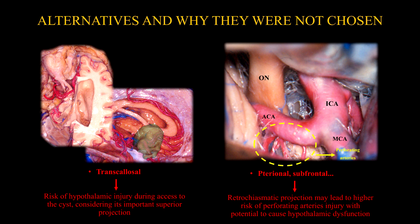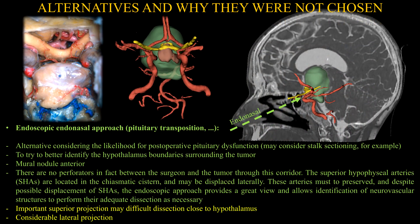Subfrontal and anterior approaches were not chosen, as the tumor was located more posteriorly than usual, with risk of injury to perforator arteries en route to the retrochiasmatic lesion, potentially causing hypothalamic dysfunction. The endoscopic endonasal approach may be an option, and given the risk of postoperative pituitary or hypothalamic dysfunction and possible stalk infiltration, maneuvers like pituitary transposition or stalk sectioning could improve exposure and allow better visualization of hypothalamic borders. However, the important superior projection may make this difficult, and there are no perforators between surgeon and tumor by this route.